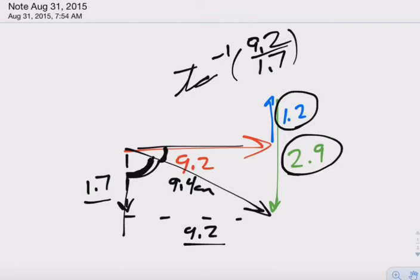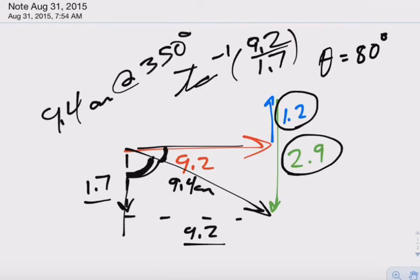Make sure you're in degree mode. That gives me an angle of, we'll call it, 80 degrees. It's past 270, therefore my final answer should be 9.4 centimeters at 350 degrees.